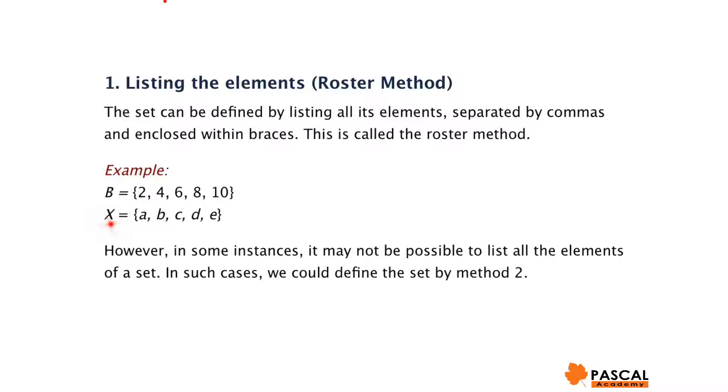Set X equals A, B, C, D, E. A, B, C, D, and E are elements of X. X has five elements. As you see, we listed all elements within curly braces, and we separated them by comma.